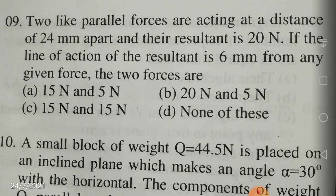You know that P plus Q equals 20 Newtons. Substituting Q equal to 3P: 3P plus P equals 20 Newtons, so 4P equals 20 Newtons and P equals 5 Newtons. Since P plus Q equals 20 Newtons and P equals 5 Newtons, Q equals 20 minus 5, that is 15 Newtons. So the forces P and Q are 5 Newtons and 15 Newtons respectively.